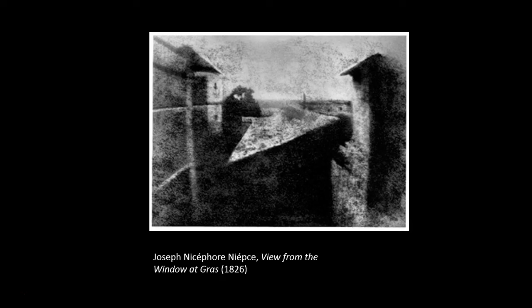19th century photographers struggled with this distinction, trying to reconcile aesthetics with improvements in technology. Although the principles of cameras were known in antiquity, the actual chemistry needed to register an image was not available until the 19th century. Artists from the Renaissance onwards used a camera obscura — Latin for 'dark chamber' — a small hole in a wall of a darkened box that would pass light through and project an upside-down image of whatever was outside.